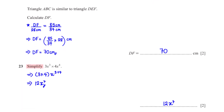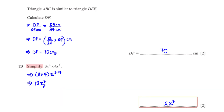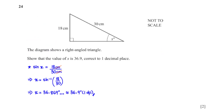Simplify 3x³ × 4x⁴. This equals 3 × 4 × x^(3+4). Since 3 × 4 = 12 and 3 + 4 = 7, the answer is 12x⁷. The diagram shows a right-angled triangle. Show that the value of x is 36.9° correct to one decimal place.